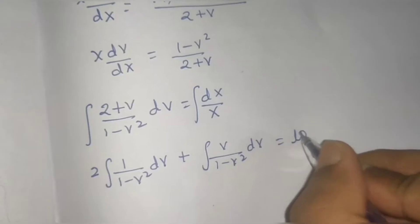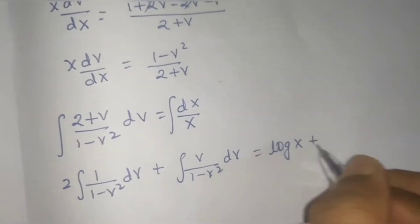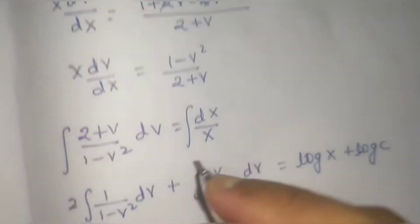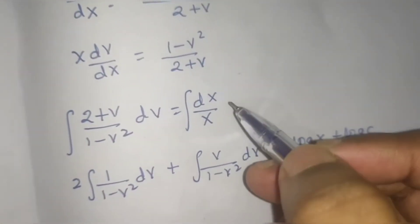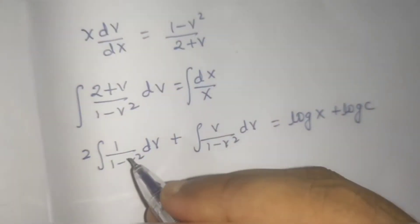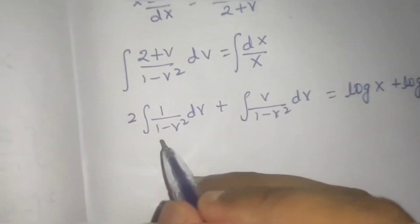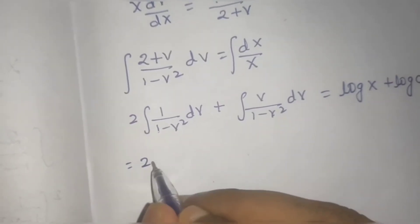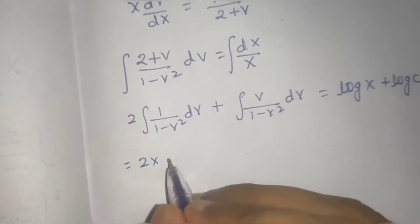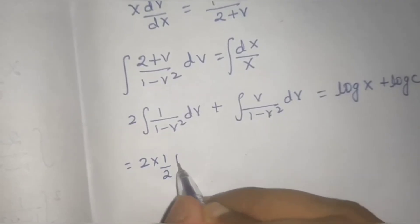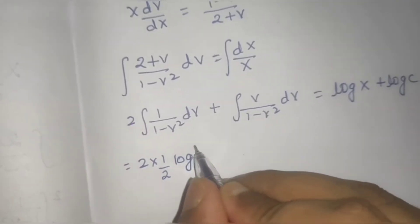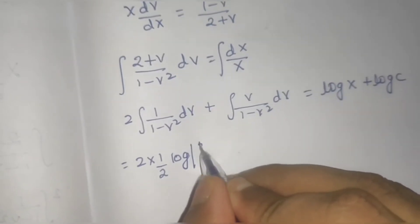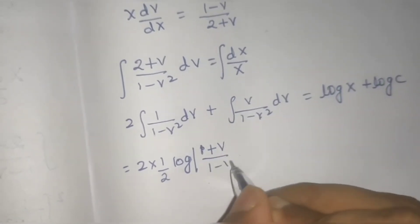For the left side, we use the formula: integral of 1/(a² - x²) = (1/2a) * log|(a+x)/(a-x)|. Here a = 1, so it gives (1/2) * log|(1+v)/(1-v)|. For the v term in the numerator (from the 2+v split), we use substitution: let t = 1 - v², so -2v dv = dt, giving -(1/2) log|1 - v²|.